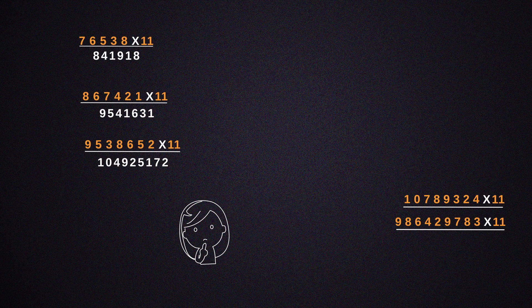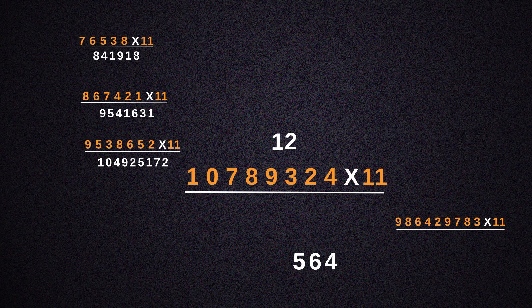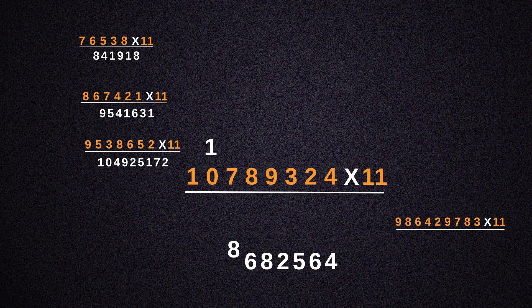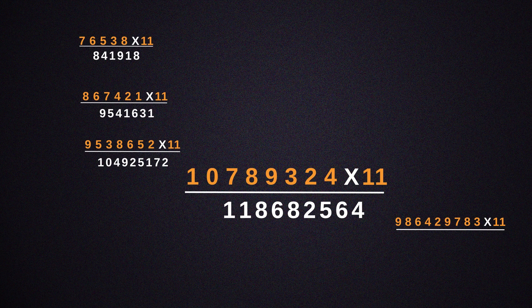Isn't that really easy? Now we're starting to take more and more larger numbers. Write 4 as it is, and add 2 and 4, giving us 6. 3 plus 2 equals 5. 9 plus 3 equals 12 — so write 2 in the answer and 1 gets carried over. 8 plus 9 is 17, plus 1 becomes 18 — write 8 in the answer. And add 7 plus 8, which is 15, plus 1, that is 16 — write 6 in the answer. Now add 7 to 10, giving us 17, plus the 1 carryover, 18 — write 8 in the answer, and the 1 gets added to the first digit, making it 11. This gives us a final answer of 118,682,564.